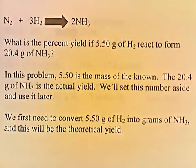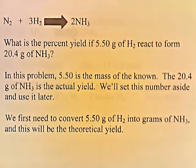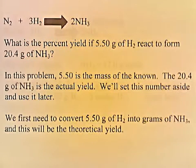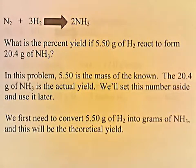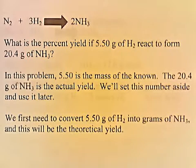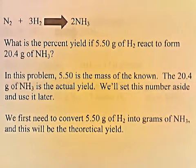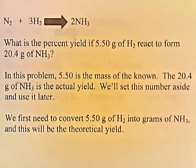What is the percent yield if 5.50 grams of H2 react to form 20.4 grams of NH3? In this problem, 5.50 is the mass of the known. The 20.4 grams of NH3 is the actual yield, so we'll set this number aside and use it later. We first need to convert 5.50 grams of H2 into grams of NH3 — this will be the theoretical yield. We start by solving it just like a regular mass-mass problem.